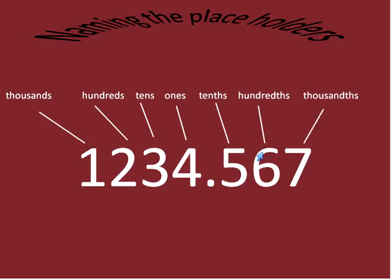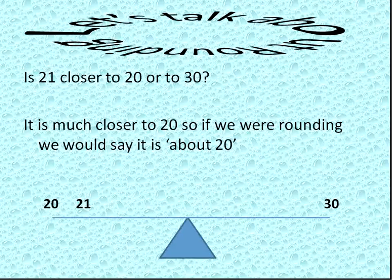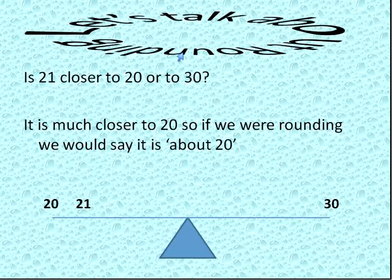Once we put a decimal in, we start working on tenths and hundredths and thousandths. And so there are five tenths, six hundredths, and then seven thousandths on this number that I have here. You're going to need to know that for when we start rounding. But for now, just put that information kind of in your back pocket and let's talk about rounding.